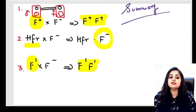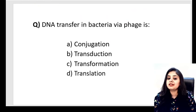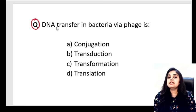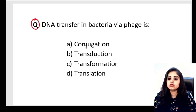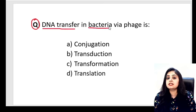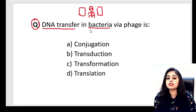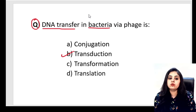There is no way to fully analyze this without solving questions — solving questions is the best approach. Question 1: DNA transfer in a bacterium via a phage is known as which of the following? Conjugation, transduction, transformation, or translation? DNA goes from one bacterium to another via a bacteriophage — that is transduction. This was the first thing we covered.